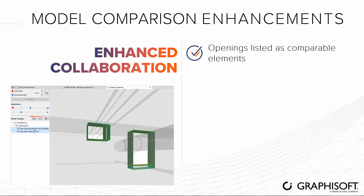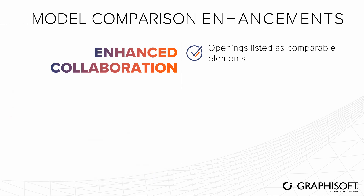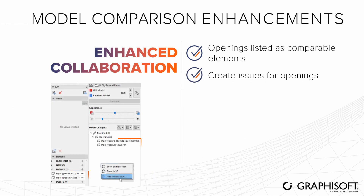Openings created for example for MEP ductwork are listed in the Model Compare window as changed elements. These elements can then be easily added directly to the issue list.